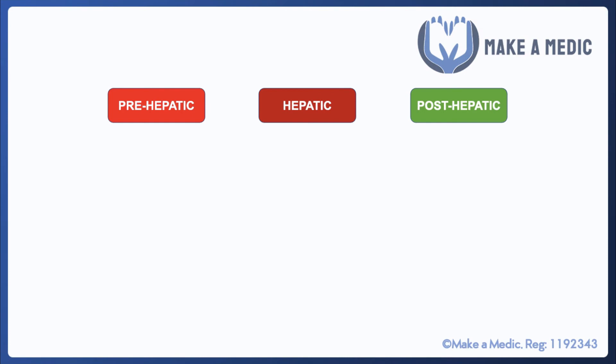One thing that tends to get quite confusing is interpreting the various levels of conjugated and unconjugated bilirubin in the blood, and whether there are pale or dark stools. Hopefully this will clear that up.